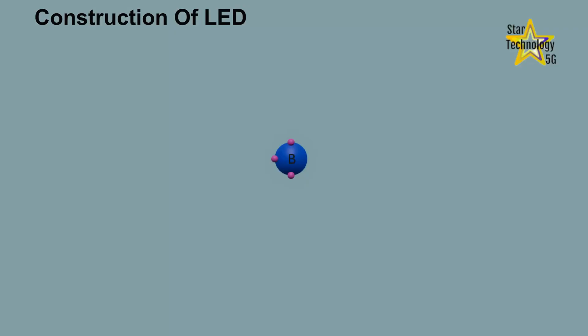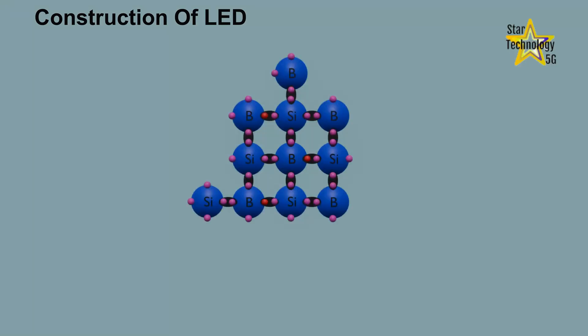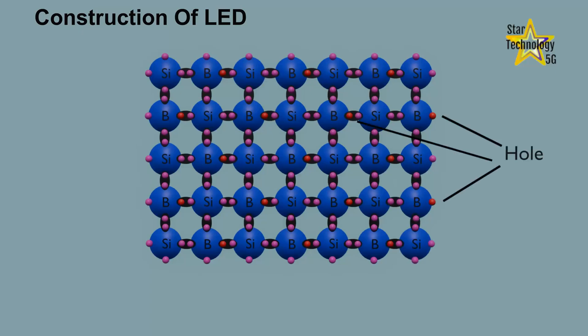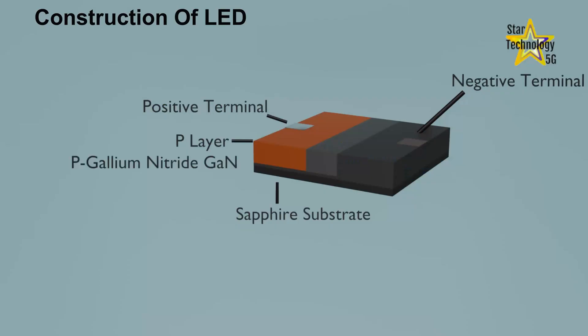P layer. When trivalent impurities are added to the intrinsic or pure semiconductor, a P type semiconductor is formed. In P type semiconductor, holes are the majority charge carriers, such as P gallium nitride.